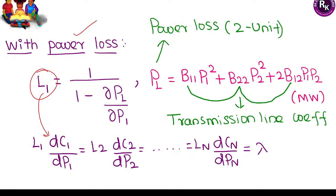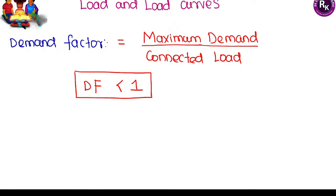Two cases: condition one — without power loss — incremental costs must be equal. Condition two — with power loss — penalty factor times incremental cost must be equal. When considering power loss with two units, to find the total power loss you need the transmission loss coefficients B11, B12, B22 and the corresponding power of unit one and unit two. This formula is very important for economic dispatch with losses.